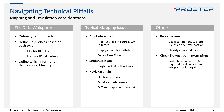Typical mapping issues we see between different systems include attribute issues. For example, you may have a free-text field in the source system and a list-of-values field in the target system — you can only put certain values in the target. Check whether you can map that via regular expressions or using a fallback if you can't find any meaningful value. Discuss this with your customer.